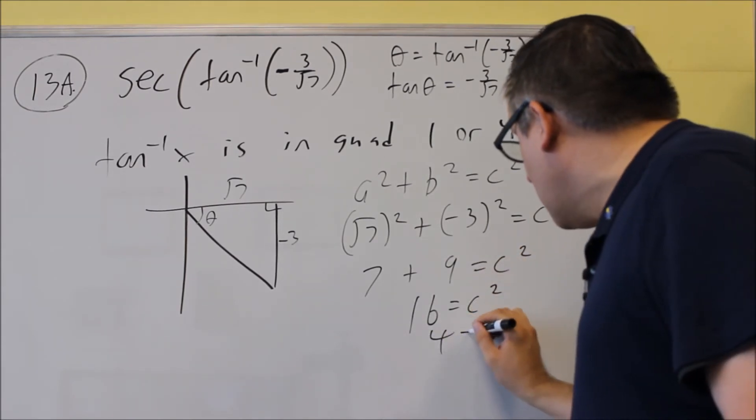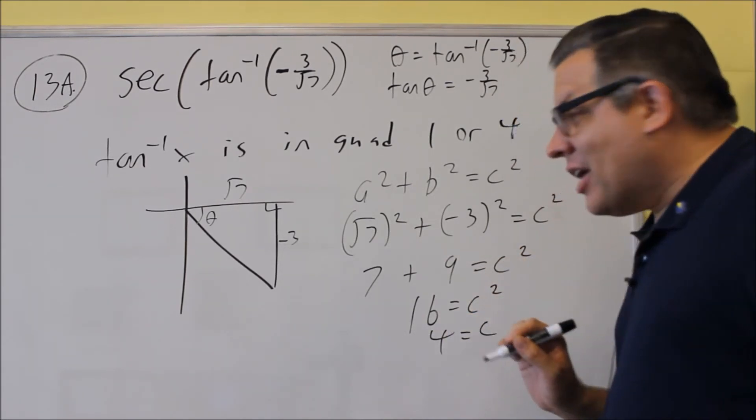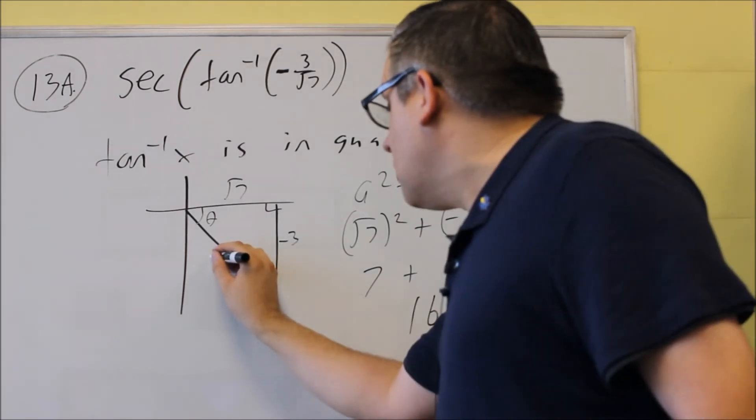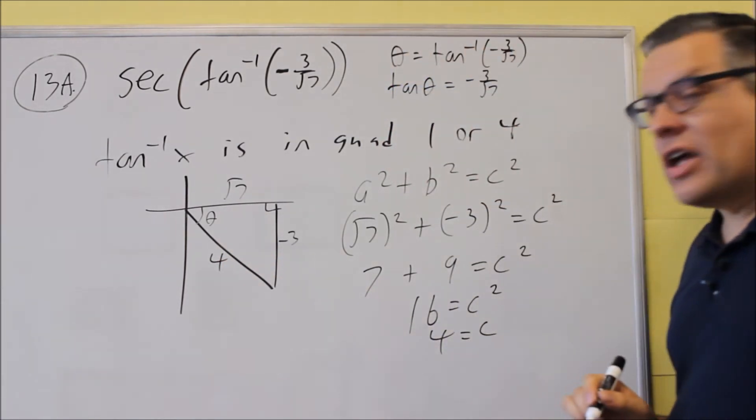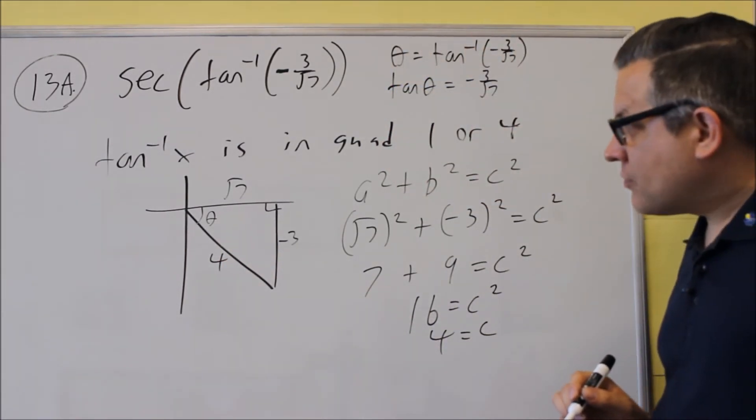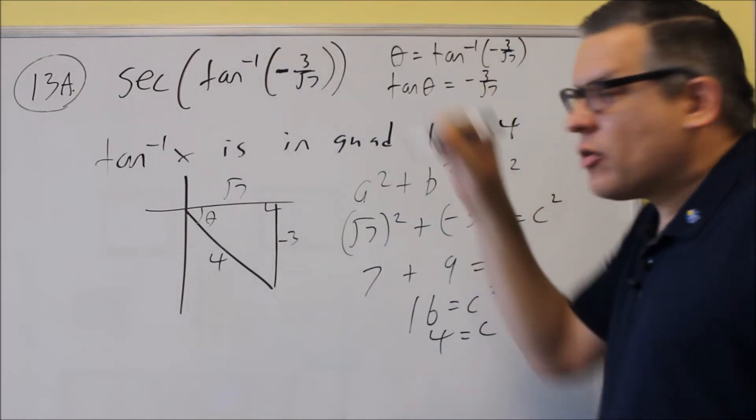And then you're left with 16 equals c squared. Square root of 16 is going to be 4. The hypotenuse is always going to be positive, so that's going to be a positive 4. So we did everything here. We used the inside one.